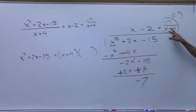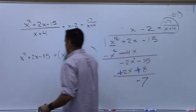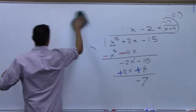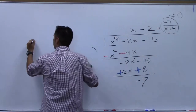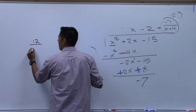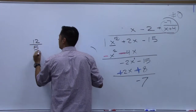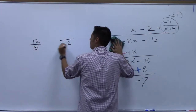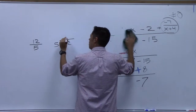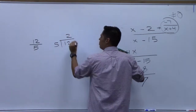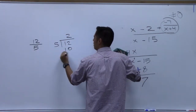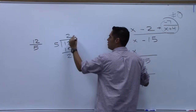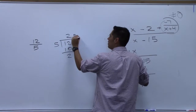Now why do we write a remainder like this? That's going to go back to some stuff from grade school. Let's do 12 divided by 5. When we did this division, we said 2, 10, 2. 5 doesn't go into 2, so we said remainder 2.